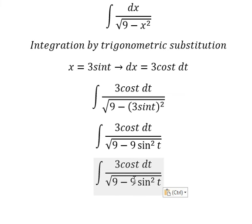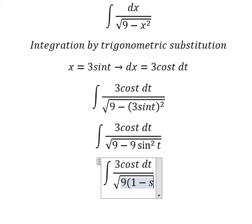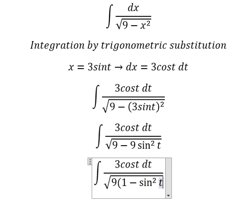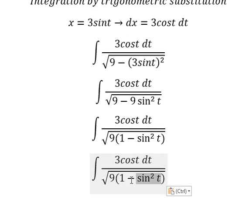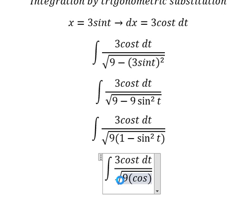So this one we change for 9 sine t squared. We can do factorization.